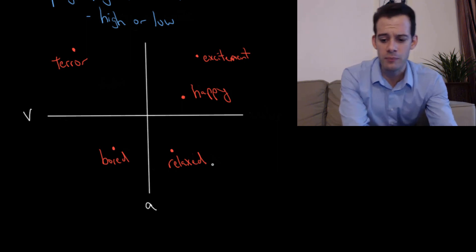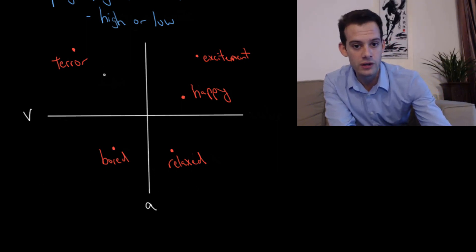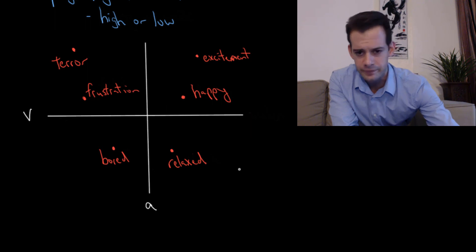And so we can go through and start putting in all sorts of things into this chart. And I won't go through too many more. You might say okay well we have something like a very negative experience but it's not super arousing physiologically. It might be something like you know maybe we put frustration over here.